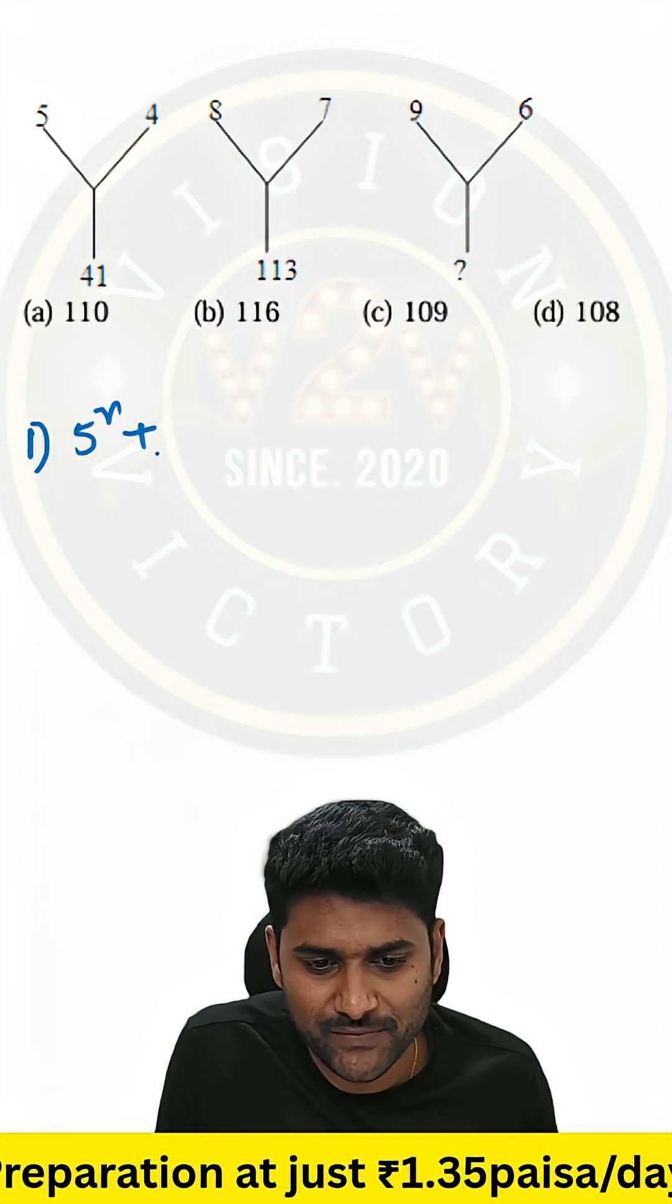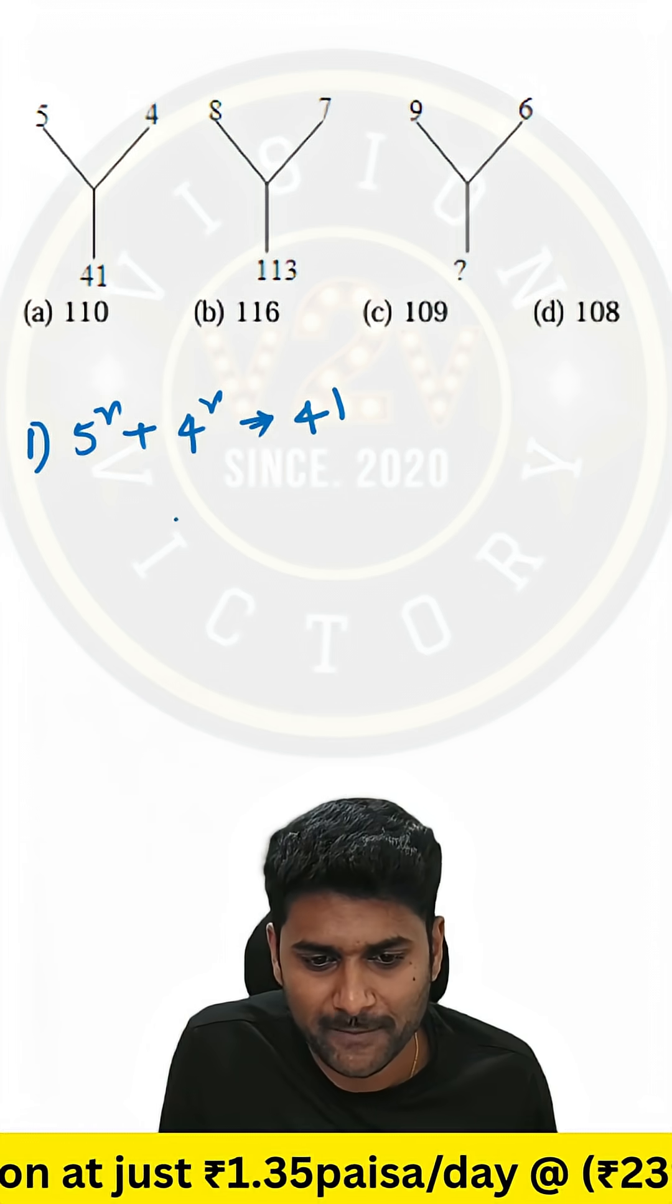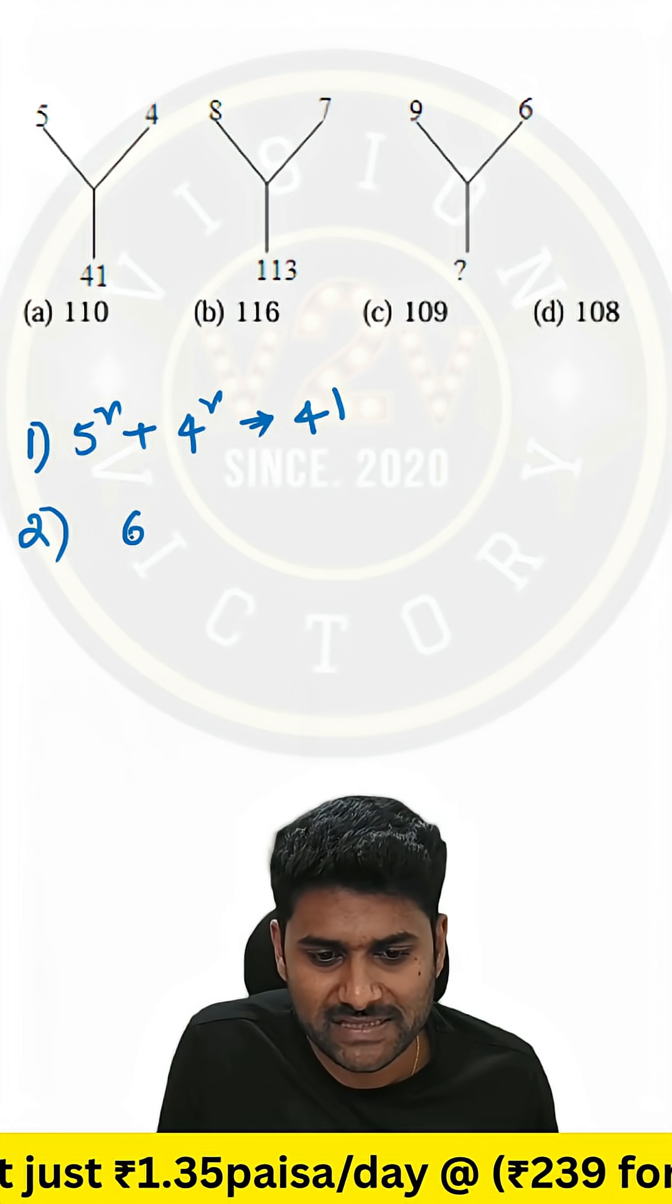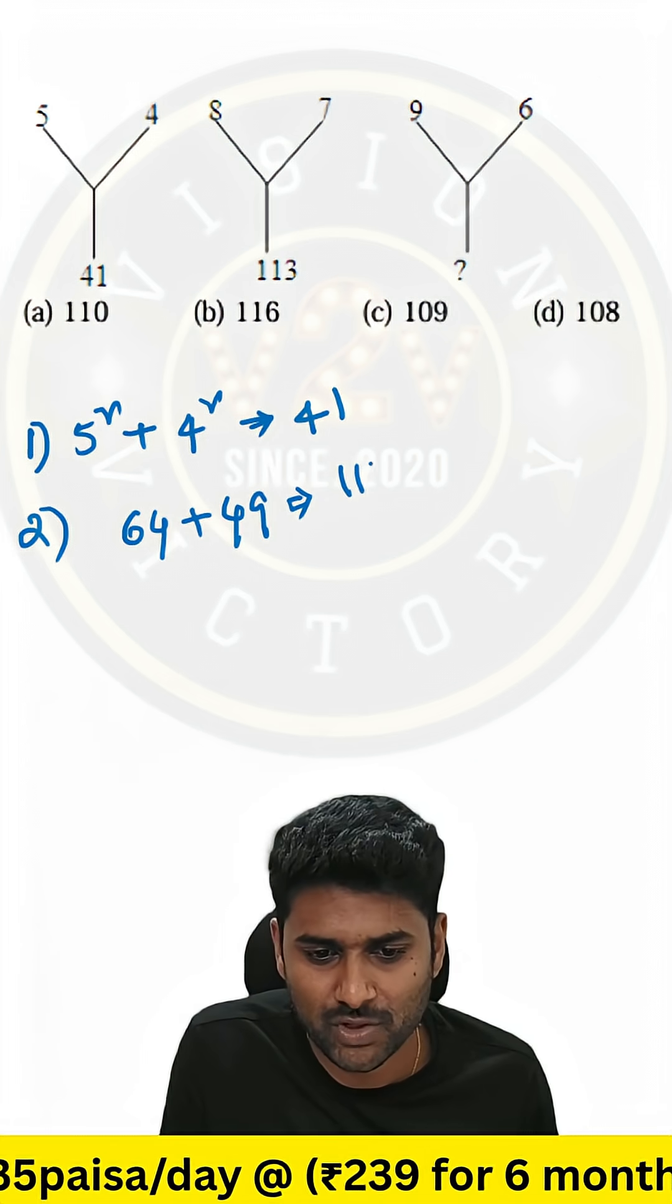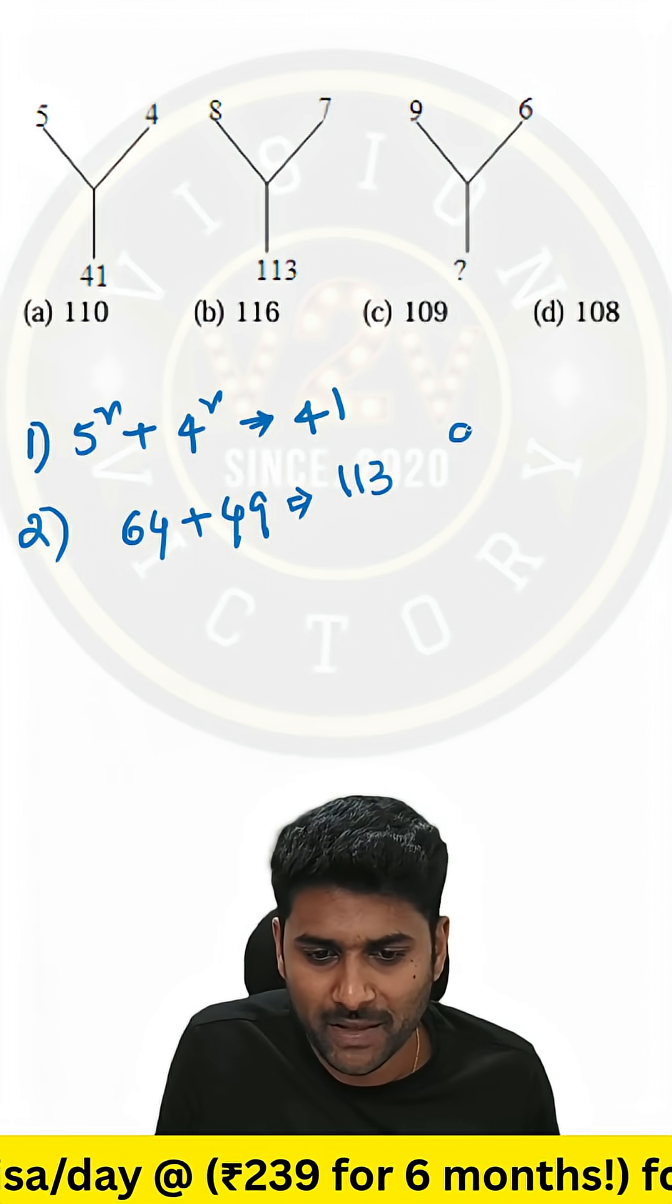5 square plus 4 square, 25 plus 16 is 41. Same way, 8 square plus 7 square, sum of these two numbers is equal to 113. If you apply the same logic here,